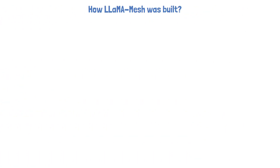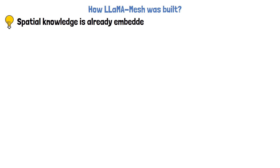Let's now move on to understand how the LLaMA Mesh model was built. First, the researchers noticed that some spatial knowledge is already embedded in pre-trained large language models. A possible reason for this could be the inclusion of 3D tutorials in the pre-training data, for example. However, the quality of their 3D object generations was not satisfactory.